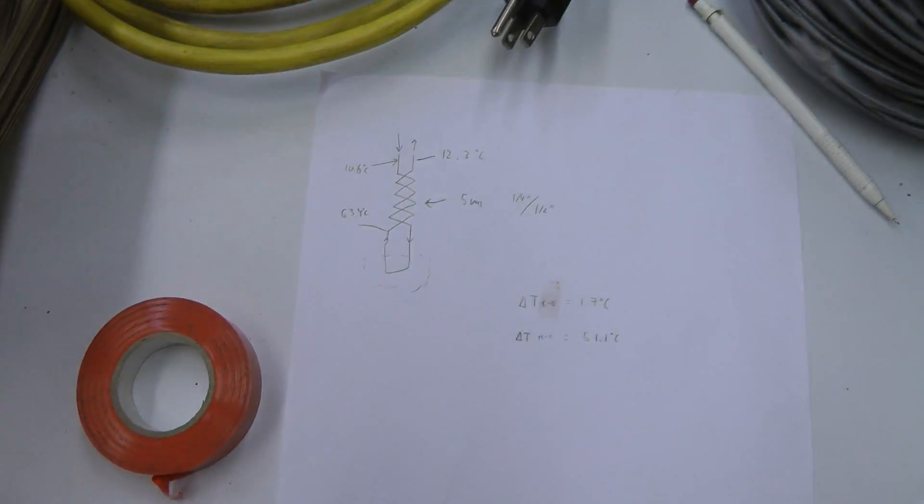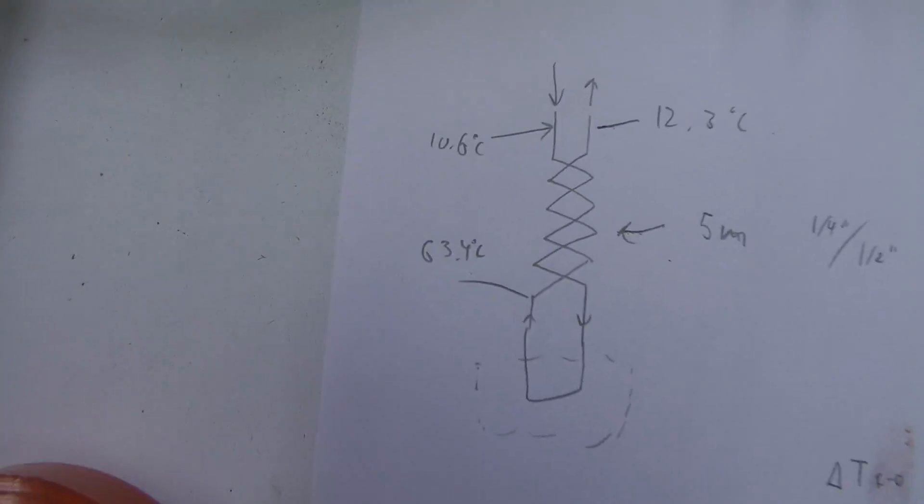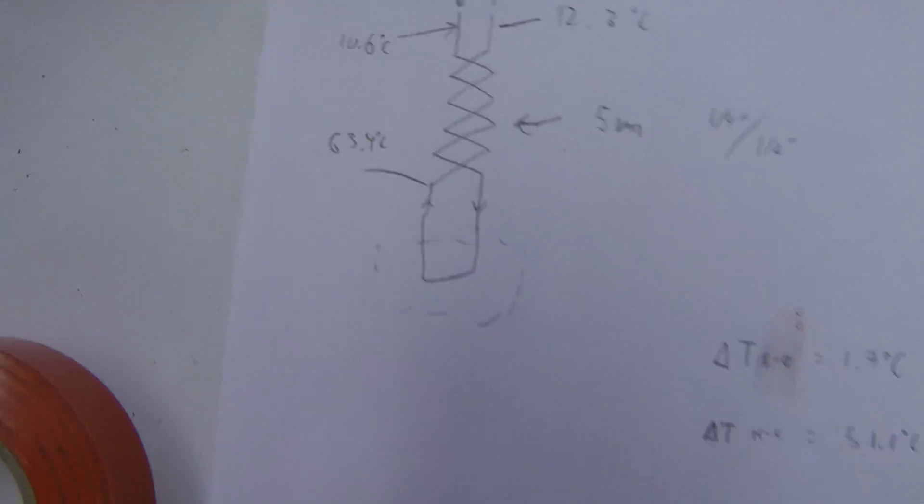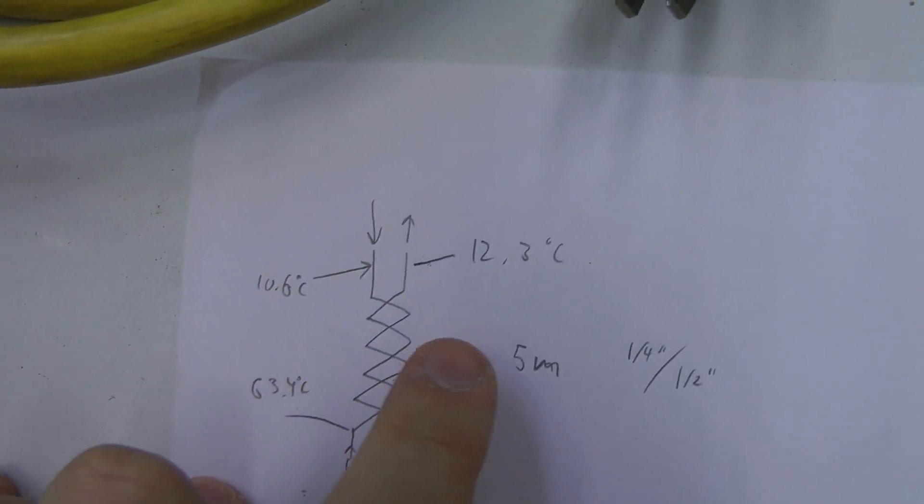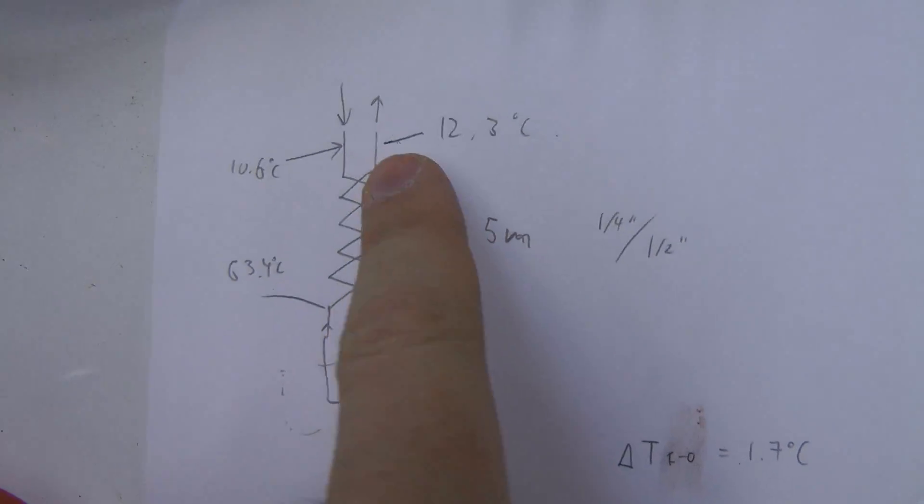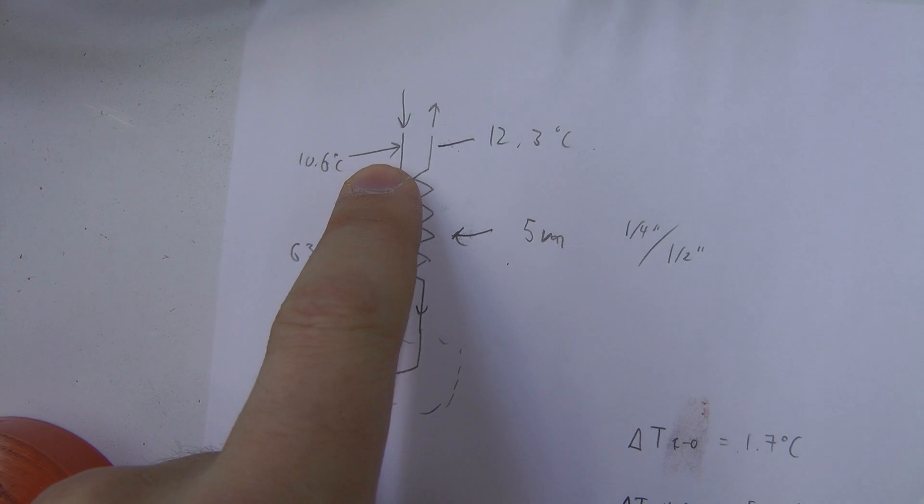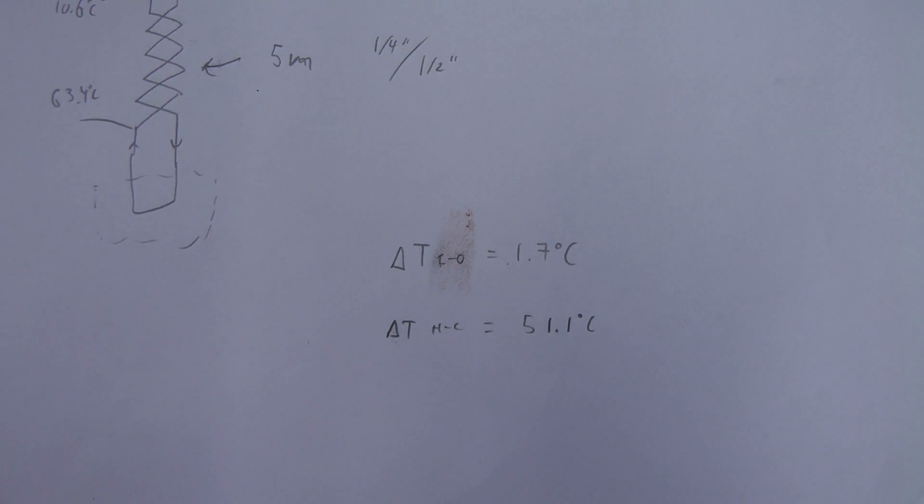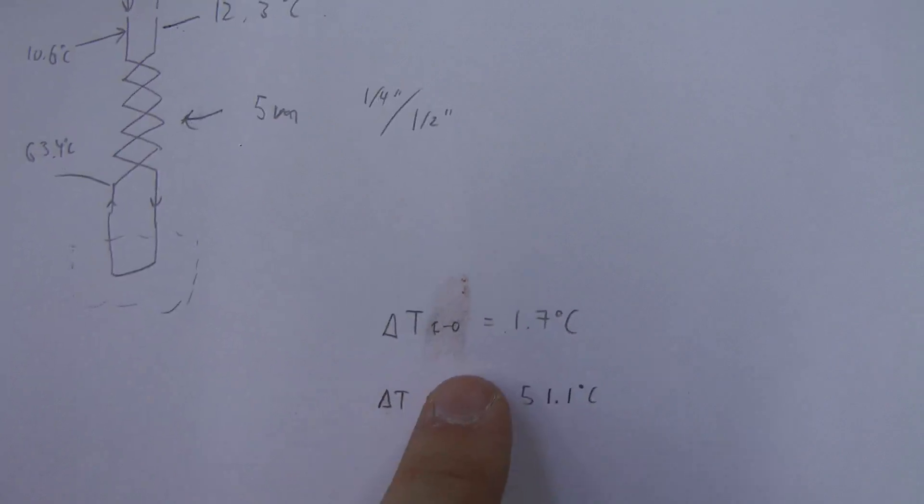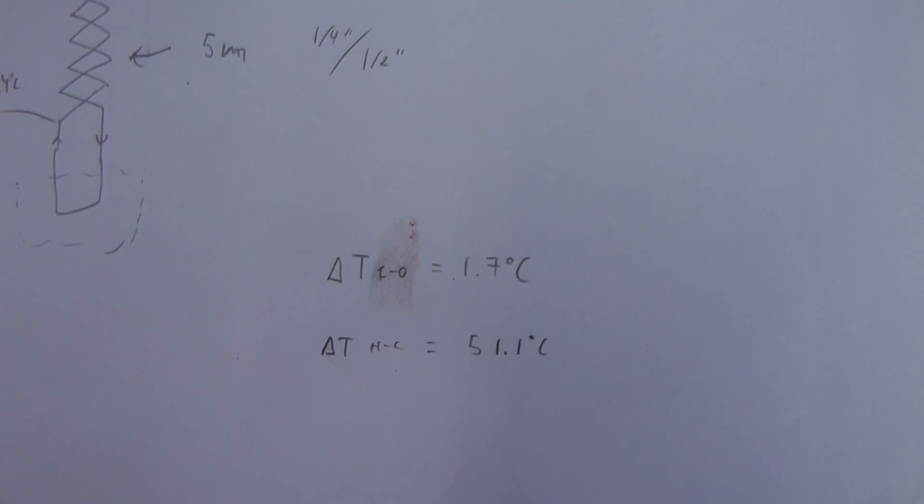Okay, the last measurement seems to have stabilized now. So the results are 63.4 degrees on the hot side, and 12.3 degrees on the exit, same gas, and the other two, the input tube, was 10.6. So we have delta T from the hot side to the cold side of 51.1 degrees, and delta T between the two input lines of 1.3.